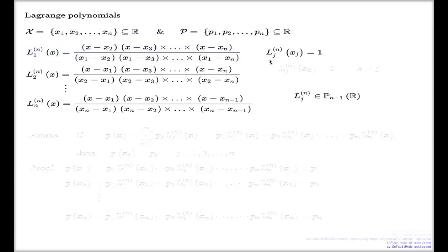That's how I fix this. My Lagrange polynomial, jth Lagrange polynomial, on the jth point, returns 1. And my Lagrange polynomial, jth Lagrange polynomial, on any other value k, returns 0 as long as k is different from j.